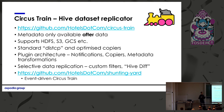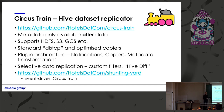Initially we built Circus Train to run on a time-based schedule — once a day, once every four hours, etc. — which works well for certain use cases. But we found that if you really want to scale this out and minimize latency between data being available and replicated, you want an event trigger for your replications. So we built a layer on top of it called Shunting Yard, which monitors the Hive Metastore for changes and automatically triggers replications in the background when data changes.